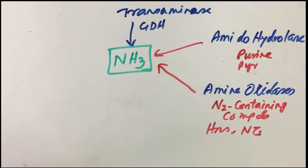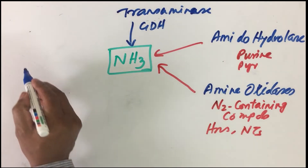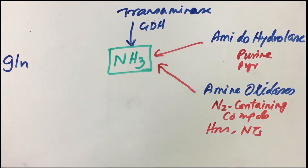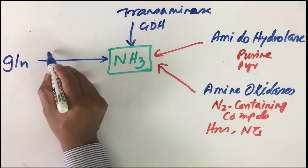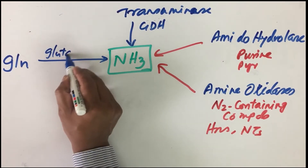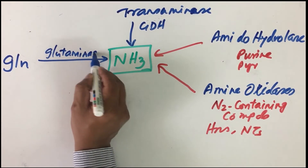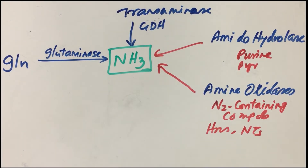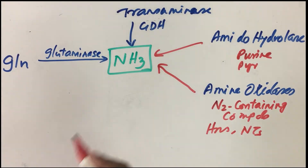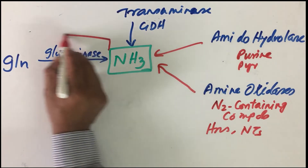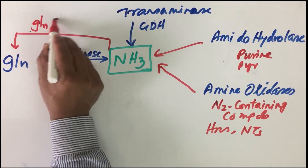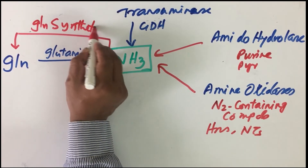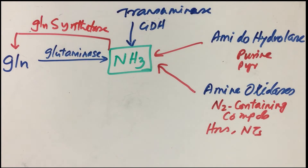Another source of ammonia is from glutamine. When glutamine deaminates — by the glutaminase enzyme — it gives rise to ammonia. We should also note that from ammonia, we can make glutamine with the action of glutamine synthetase, a reaction we have seen earlier. So these are other sources of ammonia.